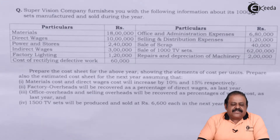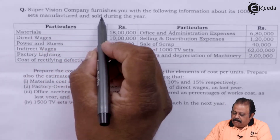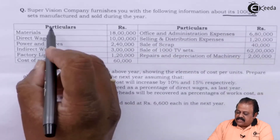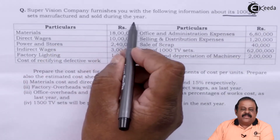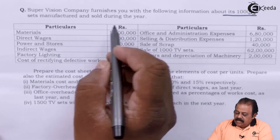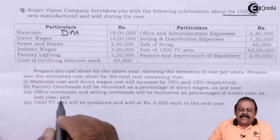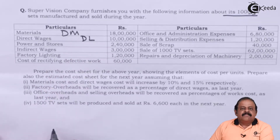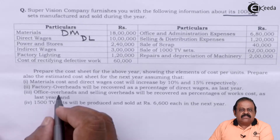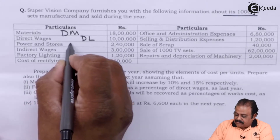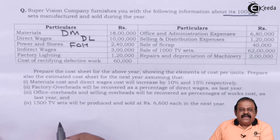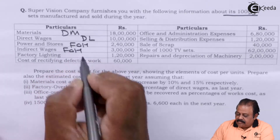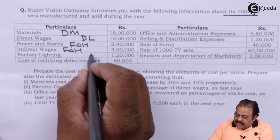Let us read the question first. Supervision company furnishes you with the following information about its 1000 TV sets manufactured and sold during the year: direct material, direct wages, direct labor, power and stores, factory overheads, indirect wages, factory overheads, factory lighting, factory overheads.